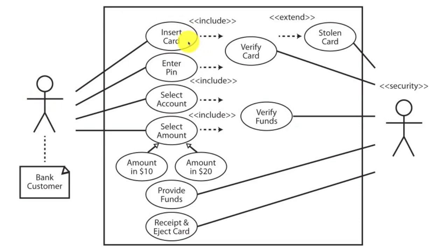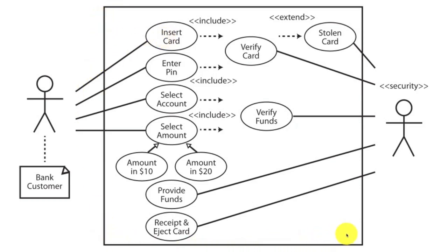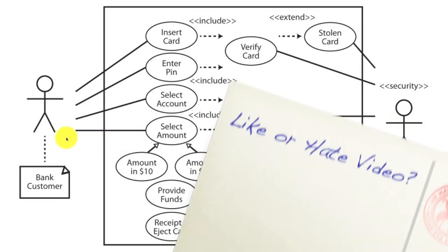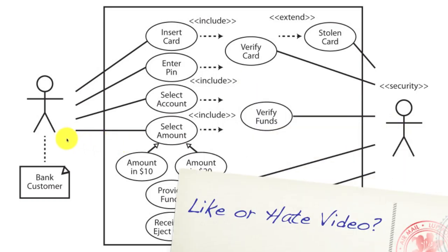This is a use case. Anytime you create a use case — which must accomplish some sort of task inside your system — you're going to surround it with an ellipse. This is known as a communication line, and all it does is connect your actors to your use cases. This large box here is what is known as a system boundary line — it surrounds your system and separates it from actors, which are on the outside.